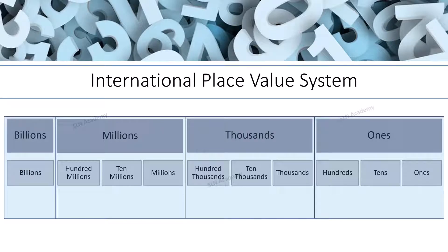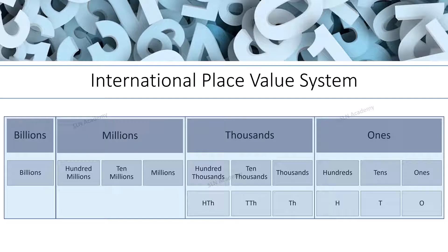We can use simple abbreviations to indicate these periods: O for Ones, T for Tens, H for Hundreds, TH for Thousands, TTH for Ten Thousands, HTH for Hundred Thousands, M for Millions, TM for Ten Millions, HM for Hundred Millions, and B for Billions.